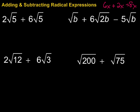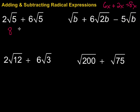We need to have the same square root, and if we do, then we can combine those things. So let's take a look at the first example. We have 2 times the square root of 5 plus 6 times the square root of 5. We have the same radical — the square root of 5 — in each of them, so we can combine them. Just like 2x plus 6x, we get 8 times the square root of 5.